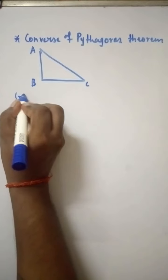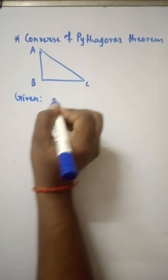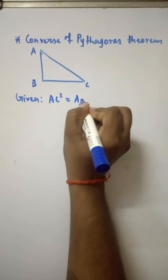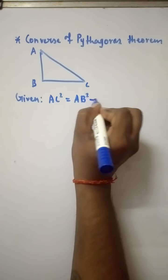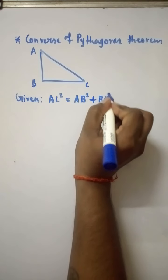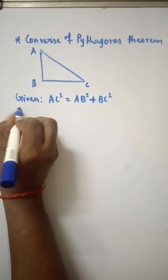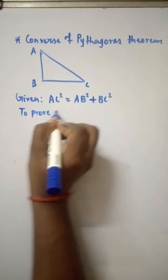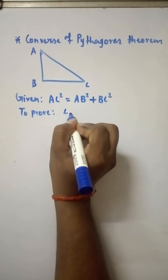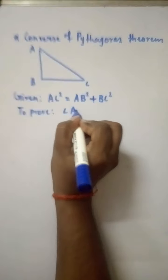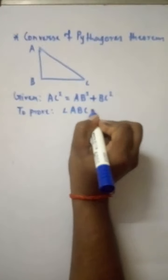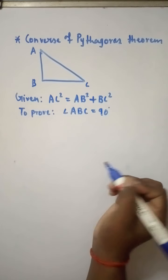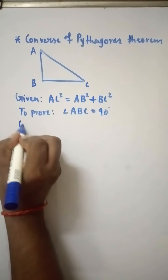What is given to us: AC² = AB² + BC². What is to prove: we need to prove that angle B, or angle ABC, equals 90 degrees.